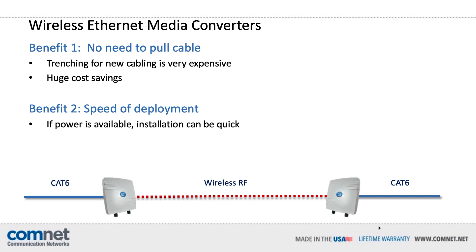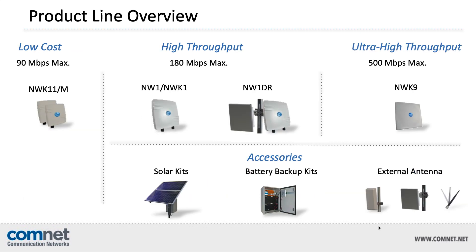The second big benefit is the speed of deployment. If you have power on site, the installation of a wireless Ethernet media converter can be very quick and effective. Here is a complete view of the newly overhauled product line. We still have three levels of data speed, but the model numbers have changed.